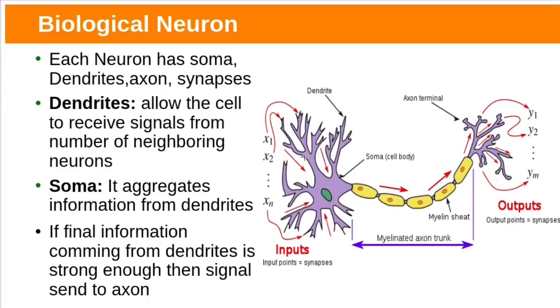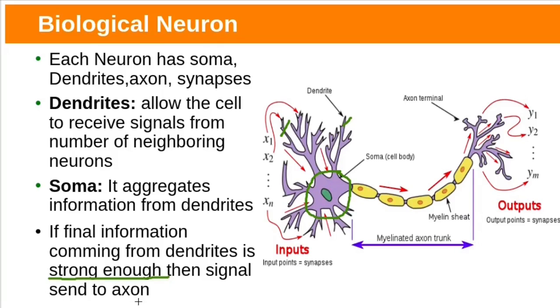Neurons receive information from other neurons via dendrites. They act like input points. Soma aggregates the input from dendrites. If aggregated information is strong enough, then signal is sent to the axon. Axon transfers signal to the dendrites of other neurons. Axon terminals or synapses connect one neuron to another neuron.